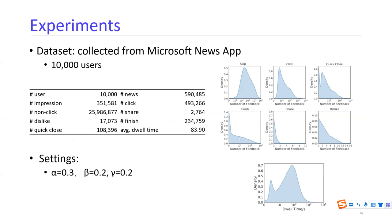We conduct experiments on a dataset collected from the Microsoft News app. This dataset contains 10,000 users. From the statistics, we can see that skip and click feedbacks are usually abundant, while quick close and finish are somewhat sparse, and share and dislike explicit feedbacks are usually the most sparse. We observe an interesting phenomenon that the distribution of dwell time has two peaks: one at about 100 seconds, and another at about a few seconds. This shows that some users may not be satisfied by the news content and leave the webpage quickly.